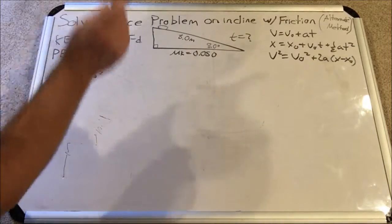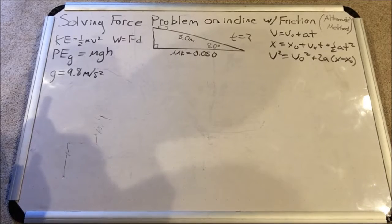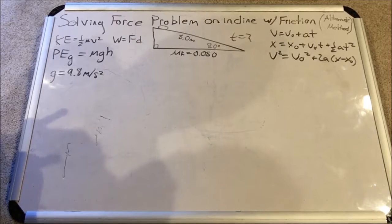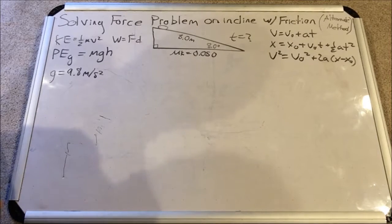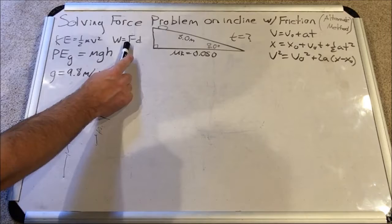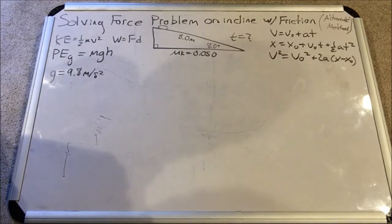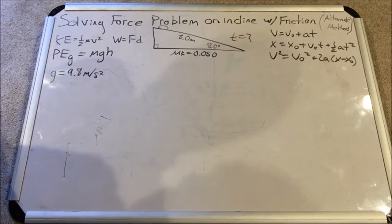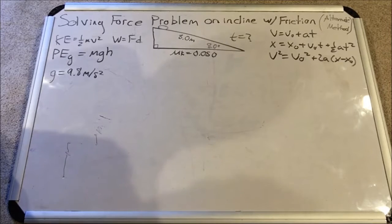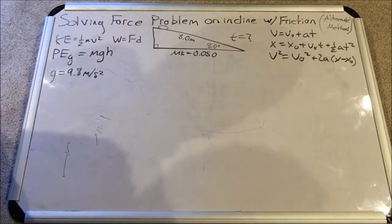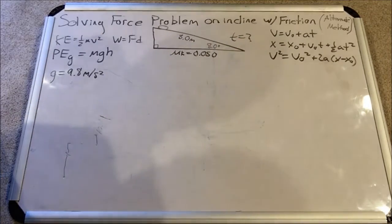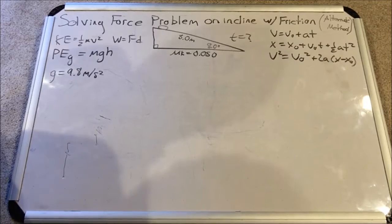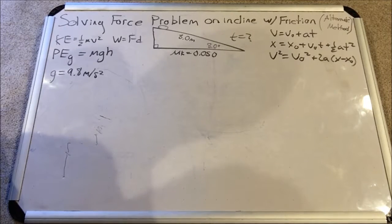And also, friction is involved. Friction is a kind of robbing force of energy. It robs the system of some of its energy, and that energy it robs is equal to the work done by friction, so the friction force times the distance over which the friction acts. We are going to set up an equation for energy conservation, and what it's going to allow us to find is the final velocity down here at the bottom. Once we have that, we can use kinematic equations to find the acceleration, and then find the time required.